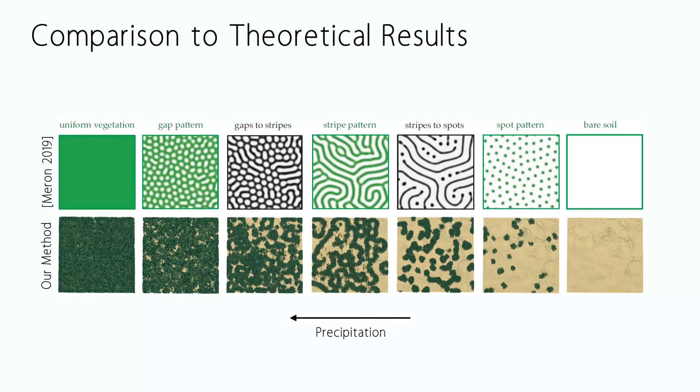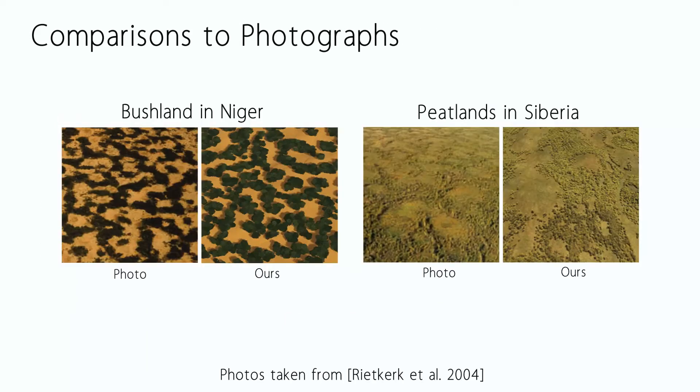Here, we compare the perimeter space of our model in terms of gaps, stripe and spot patterns to a study published by Meron. To better illustrate the expressiveness of our approach, we simulated bushland in Niger and peatlands in western Siberia and compared them to real photographs of vegetation in those regions.